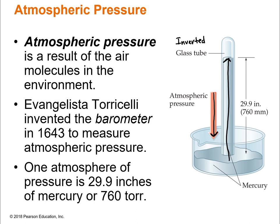The height of the mercury is what you measure, and that is one of the units of pressure. So 760 millimeters of mercury is a barometer reading equivalent to one atmosphere. You also see 29.9 inches of mercury and 760 torr — which alludes to the fact that there are lots of different units of pressure we're going to be talking about.